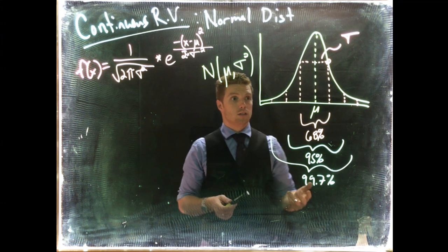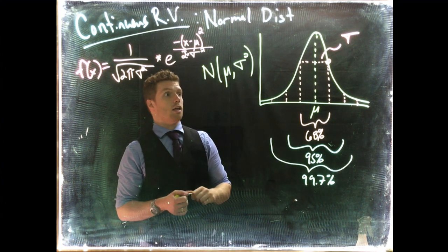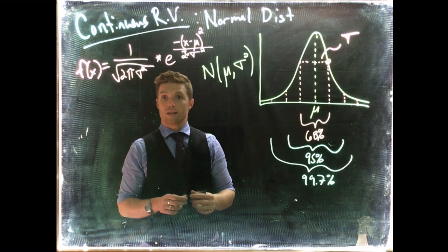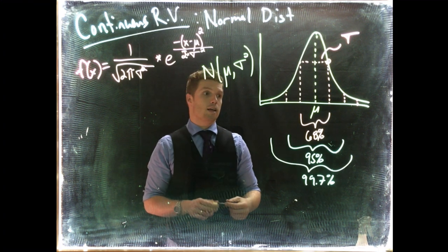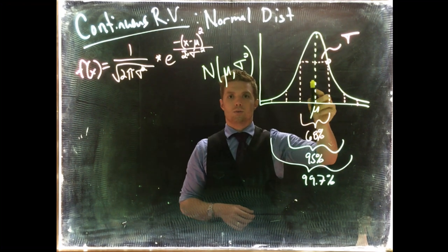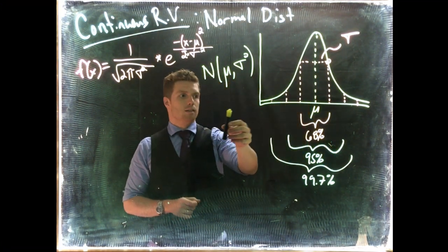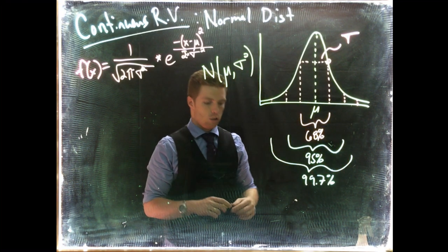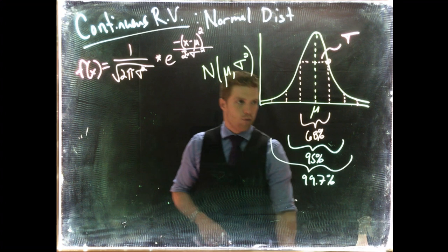We're going to still use the same principles about trying to determine the probability of an event happening. We know that from the mu, fifty percent of the data is less than mu and fifty percent is above. That's really nice to know.